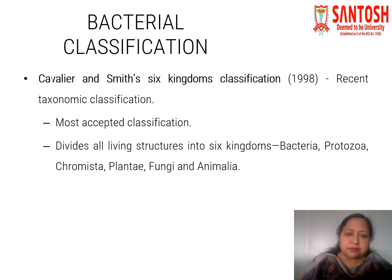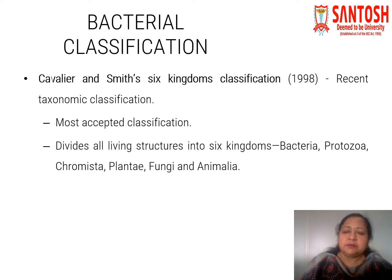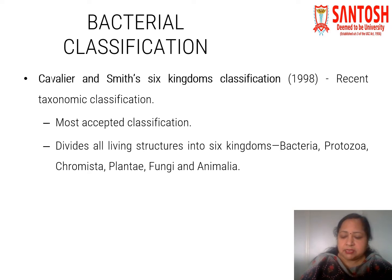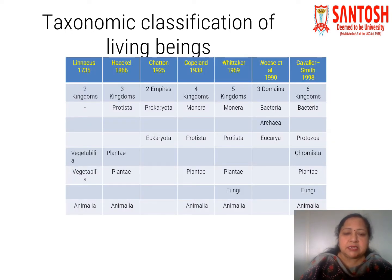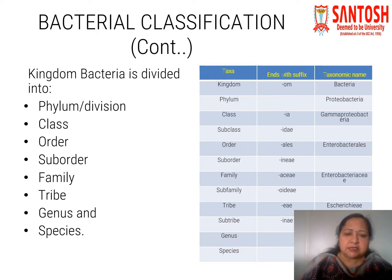The most accepted bacterial classification is the Cavalier-Smith Six Kingdom classification, proposed in 1998. This classification divides living structures into six kingdoms: Bacteria, Protozoa, Chromista, Plantae, Fungi, and Animalia. The Kingdom Bacteria is divided into phylum, class, order, suborder, family, tribe, genus, and species.